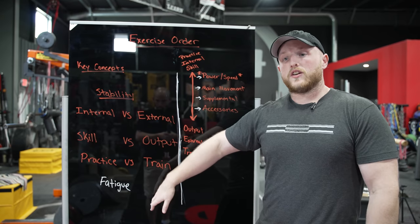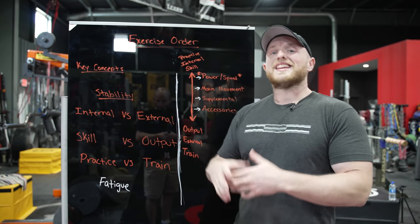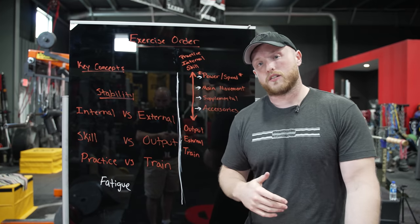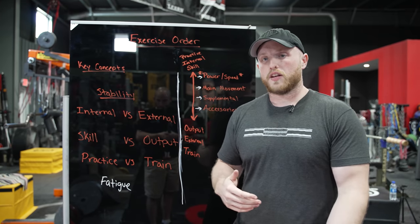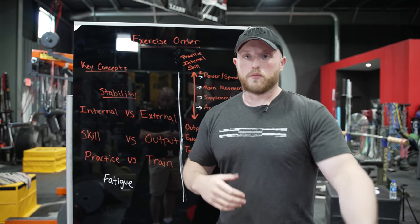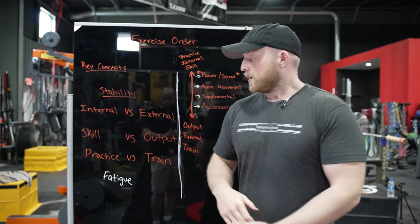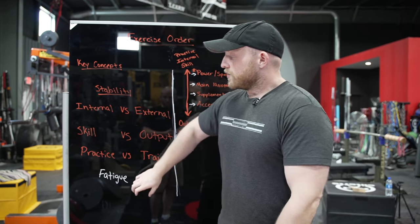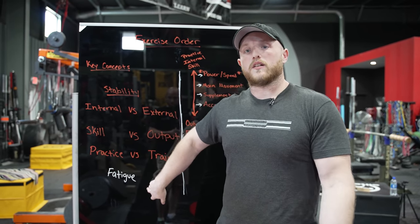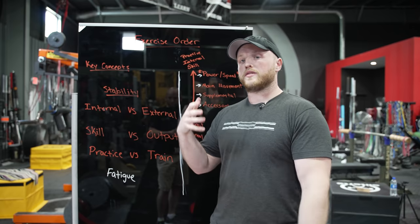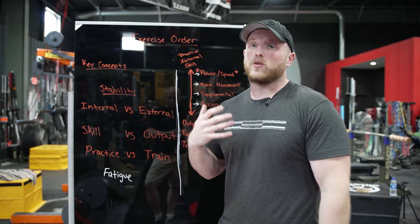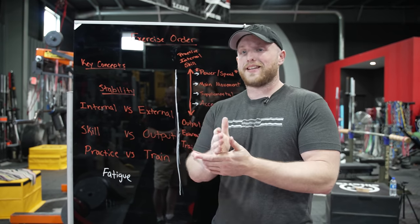The last key concept is practice versus training. We practice an internally stabilized skill, and we train output. If you are doing something at the beginning of your workout, make sure it's more skill-based, requiring more cognitive effort and internal stability — your ability to maintain positions without external means. At the beginning of a training session you have less fatigue, so if you're an athlete doing jumps, throws, and sprints, do those first.